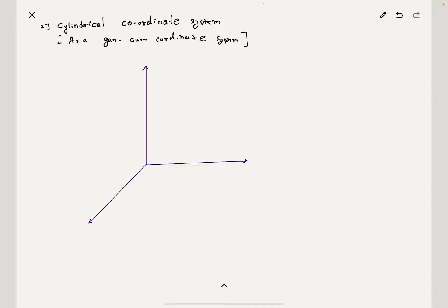You should consider the X axis, Y axis, and Z axis. We have a point in the cylindrical curvilinear coordinate system.